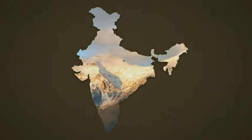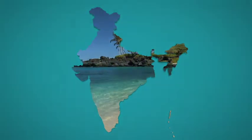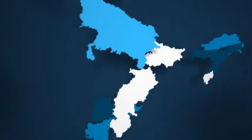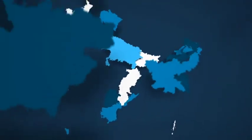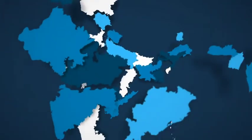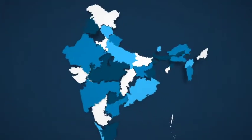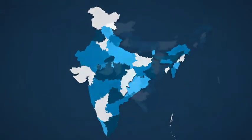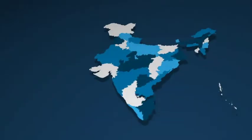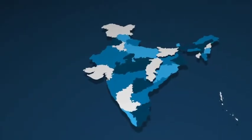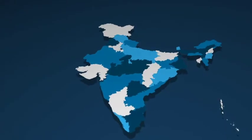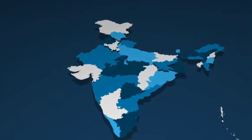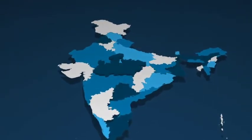Images, footage, whatever you need. Highlight states with different colors to represent whatever you need the map to represent. Or get creative and add your own animations and images into the texture layers.